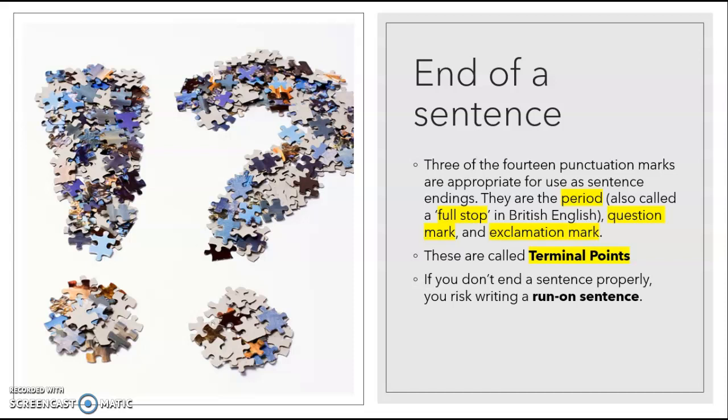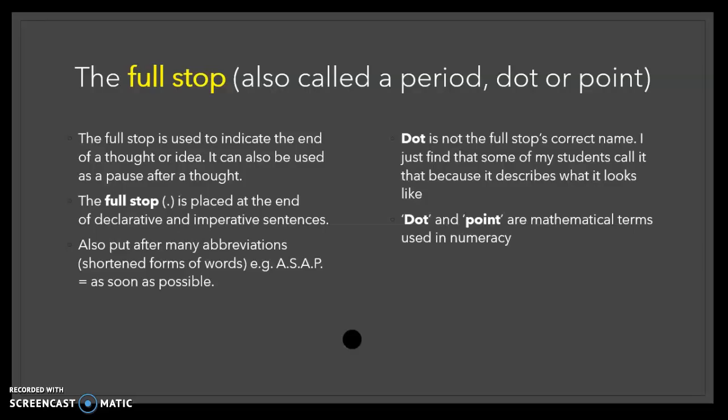As I mentioned, today we're focusing on punctuation at the end of a sentence. So three of the 14 punctuation marks are appropriate as sentence endings. These are called the period or full stop, the question mark, and the exclamation mark. These are called terminal points, and if you don't end a sentence properly, you risk writing a run-on sentence. We'll talk about run-on sentences another day.